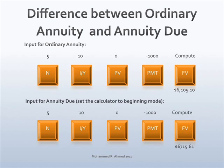Once the calculator is set for beginning mode, enter the data: 5N, 10 I/Y, 0 PV, 1000 plus and minus payments. Press CPT key and FV for TI, and just FV key for HP. The future value of $1,000 deposits for five years is $6,715.61.